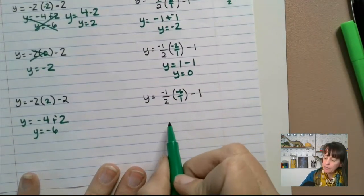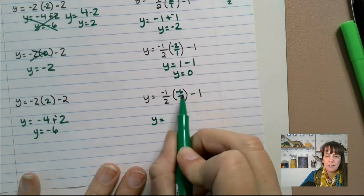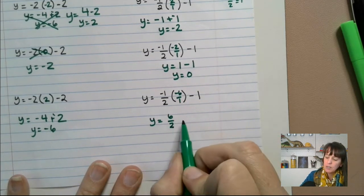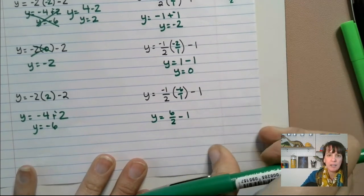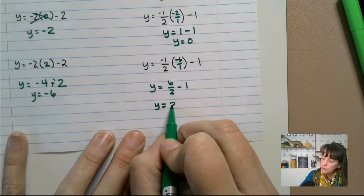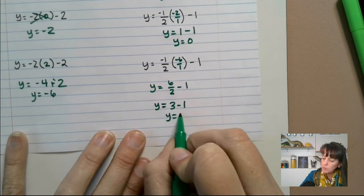Now over here, we've got y equals negative times a negative is a positive. And I get six over two minus one and six over two is three. Six divided by two is three. So y equals three minus one, which means y equals two.